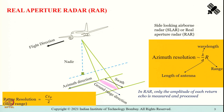Shown here is the flight direction. By now I assume you are familiar with the terminologies: the nadir direction, the azimuth direction, the ground range direction, and the swath. In real aperture radar or side looking airborne radar, the amplitude of each return echo is measured and processed — amplitude.